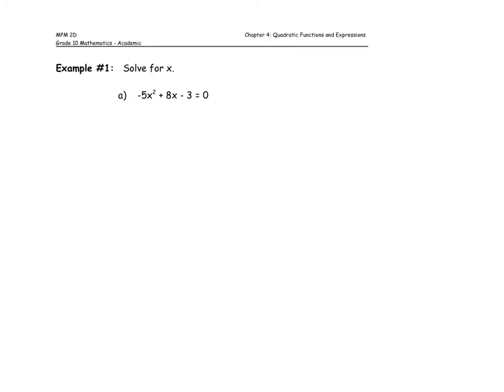I've chosen this first example very carefully because there's something I'm hoping to demonstrate once we've solved it using the quadratic formula. One important first step is to identify a, b, and c and write those out separately. I can see that the value of a is negative 5, the value of b is positive 8, and the value of c is negative 3.